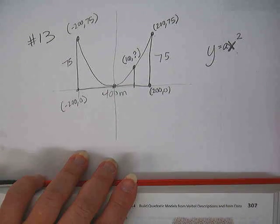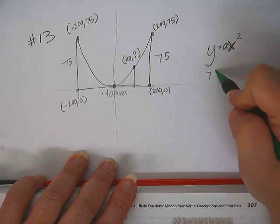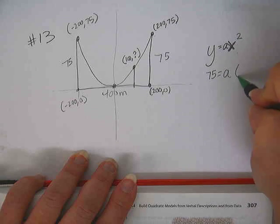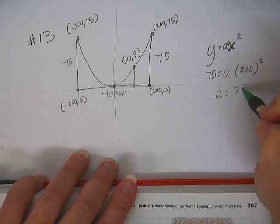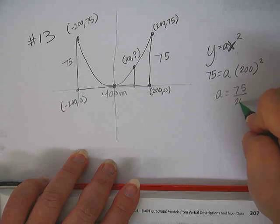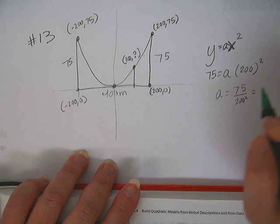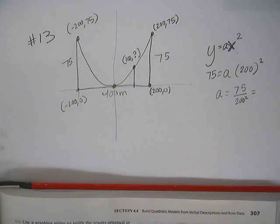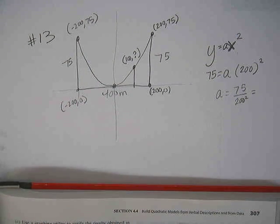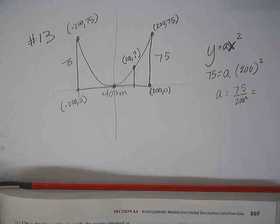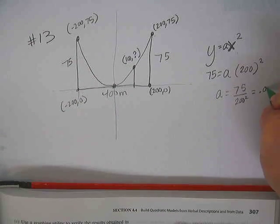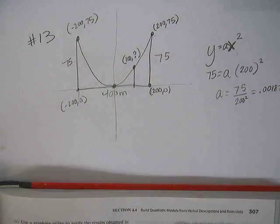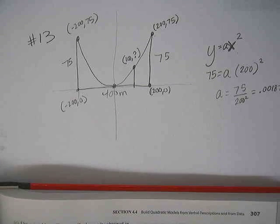Okay. So then in order to find the a value, we're going to plug in a number that we know. 75. So 75 for the y, a, and 200 for the x. So that allows us to find a. What will a be? 75 divided by 200 squared. If you want to go ahead and do a decimal answer or at least simplify the fraction, that would be good. What do we get if we do that? So I got .001875.